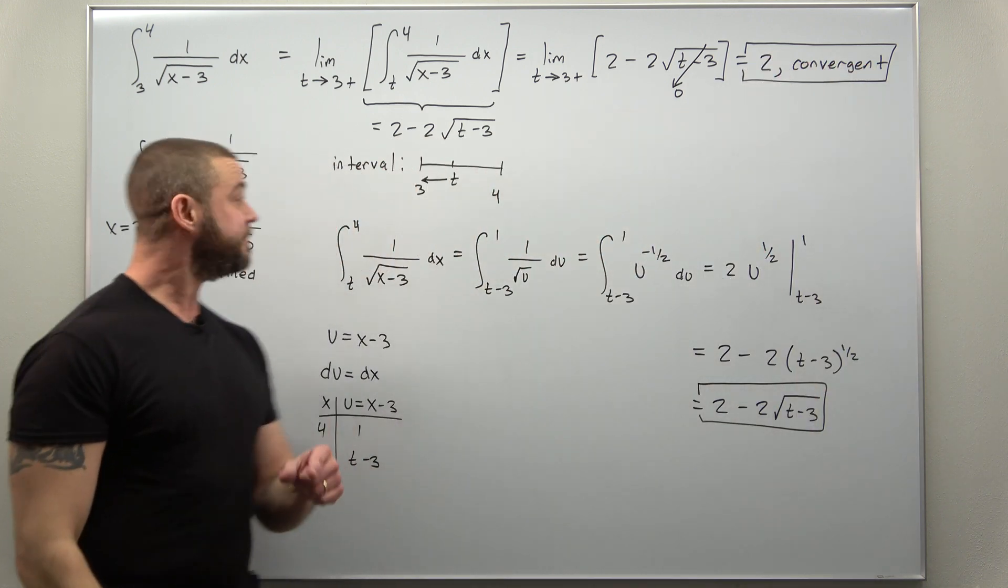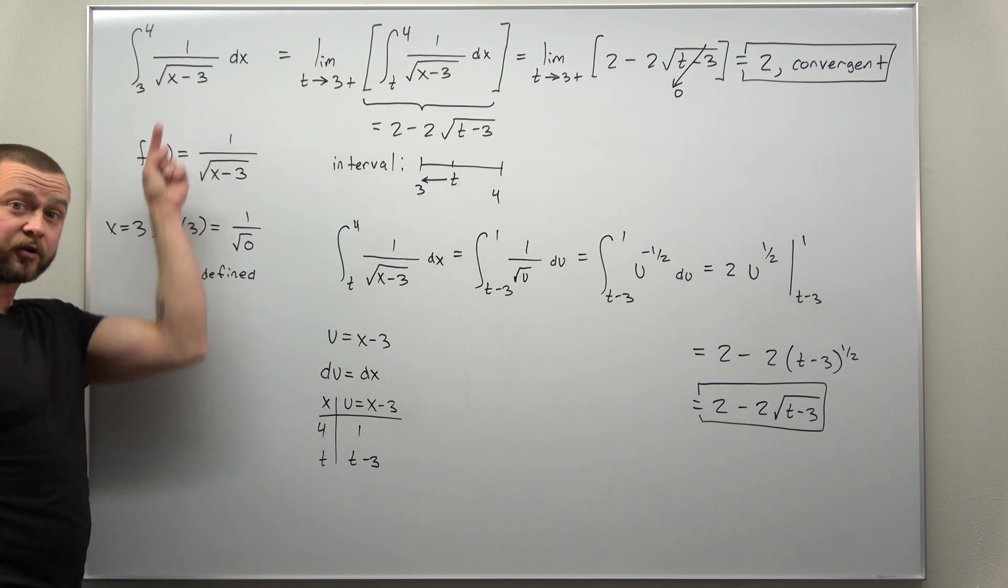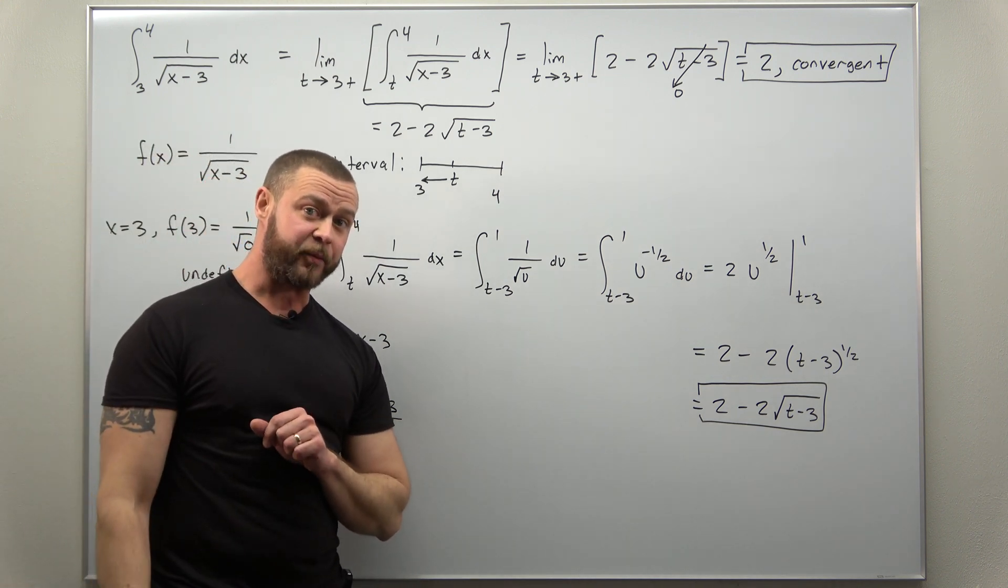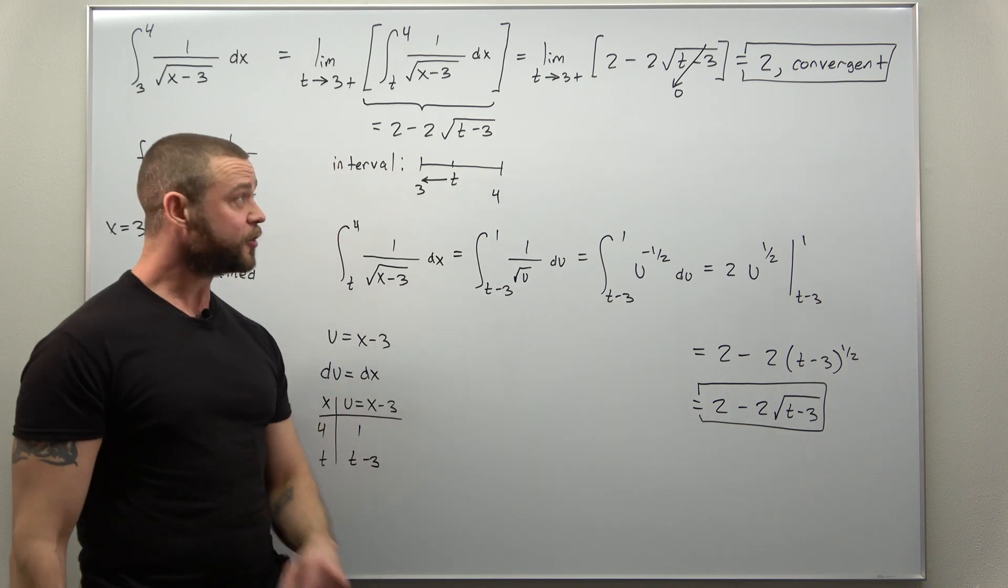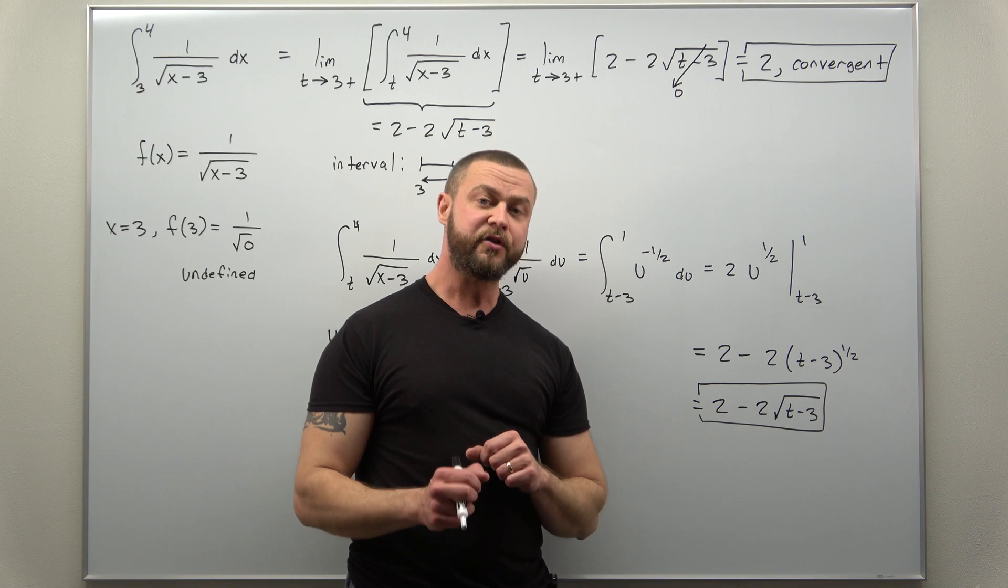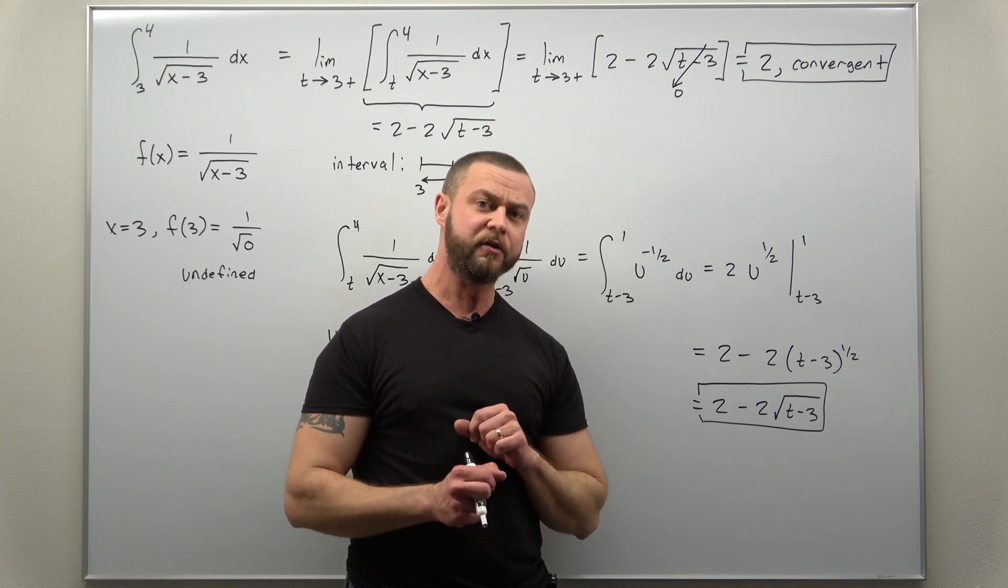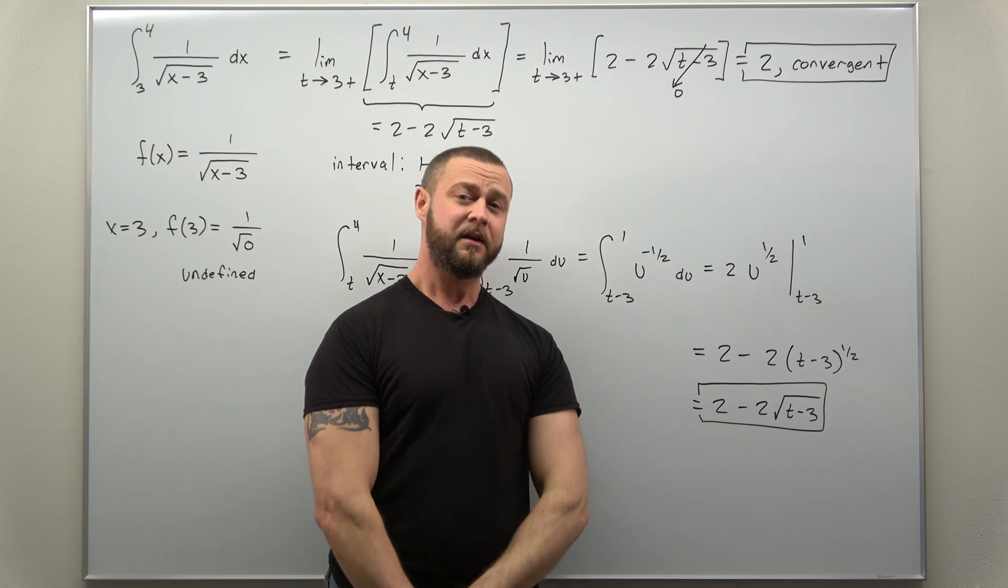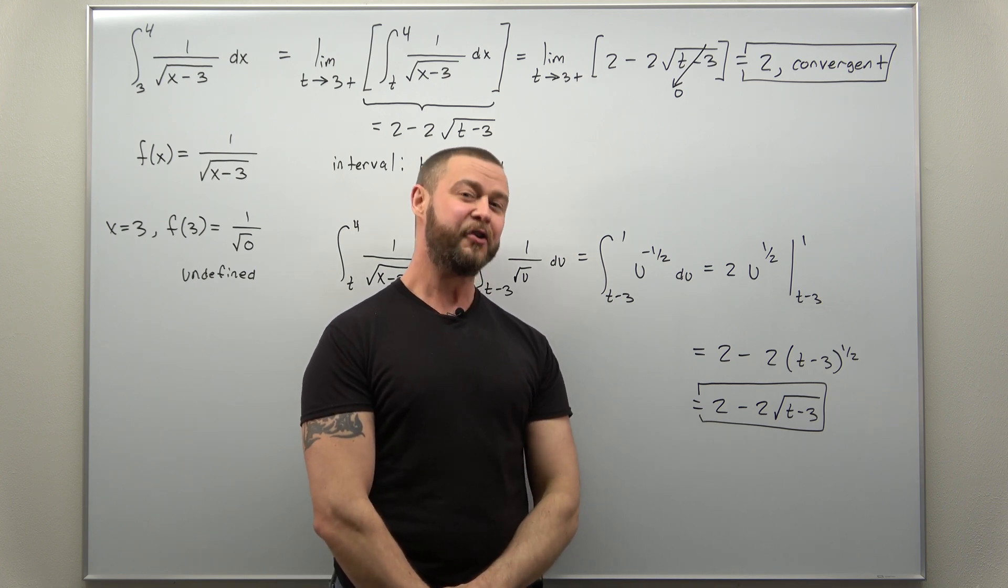And there we go! So we have found that our improper integral of the second type is a convergent improper integral and it converges to 2. Hopefully you enjoyed this short video on improper integrals, straight to the point. If you're enjoying the content, support the channel—make sure to like and subscribe.